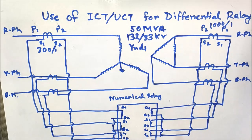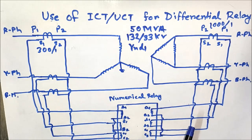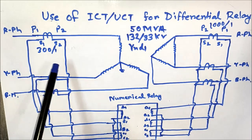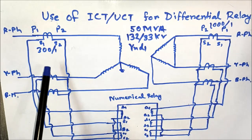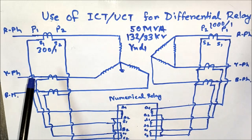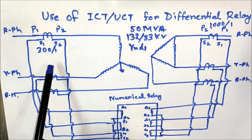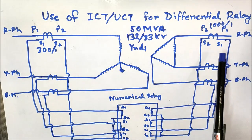The differential relay connection for a numerical relay is shown in this diagram. Differential relay connections are taken from the HV side and LV side CTs. The HV side CT ratio is 300/1 and the LV side CT ratio is 1000/1.